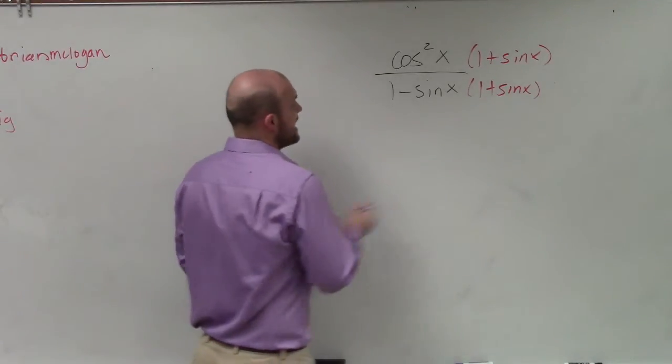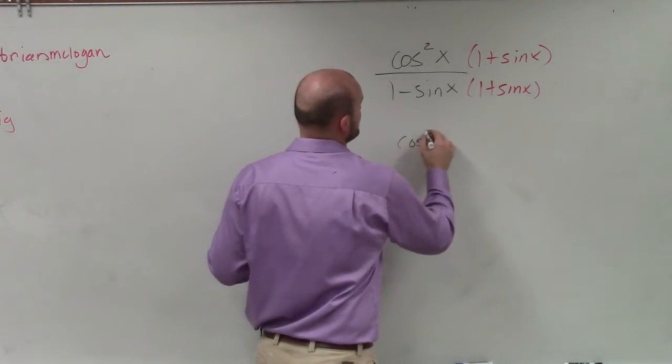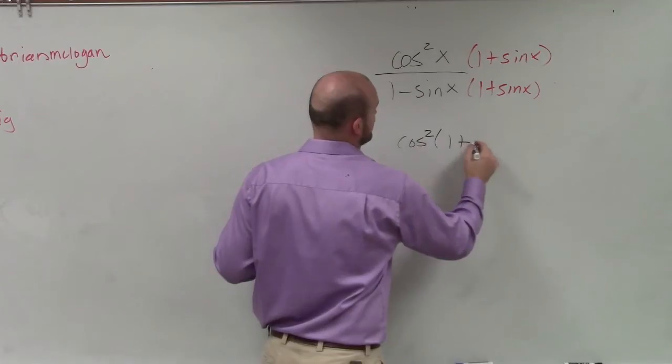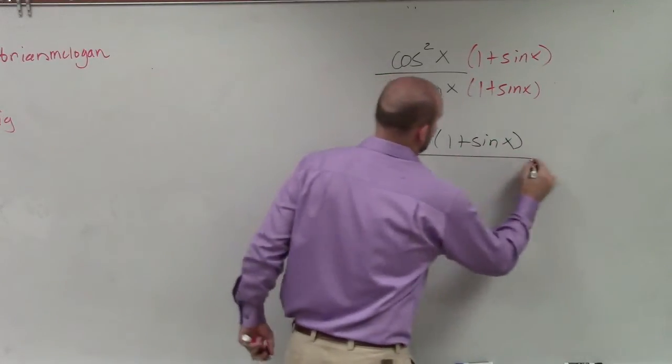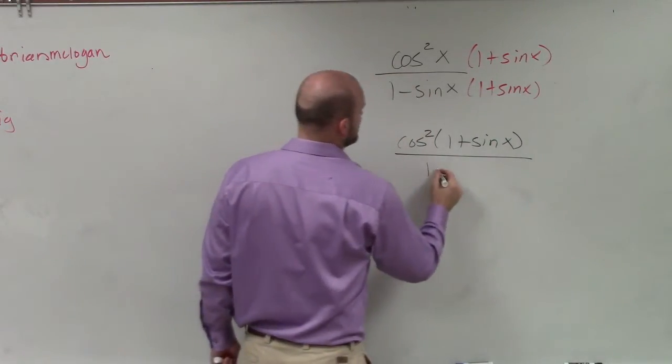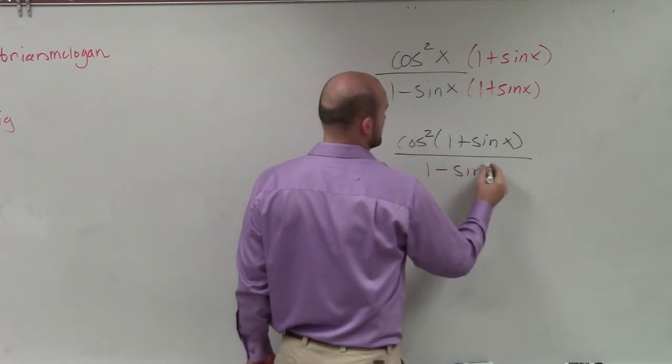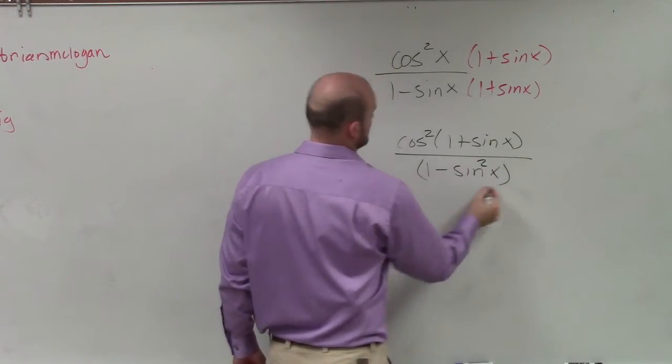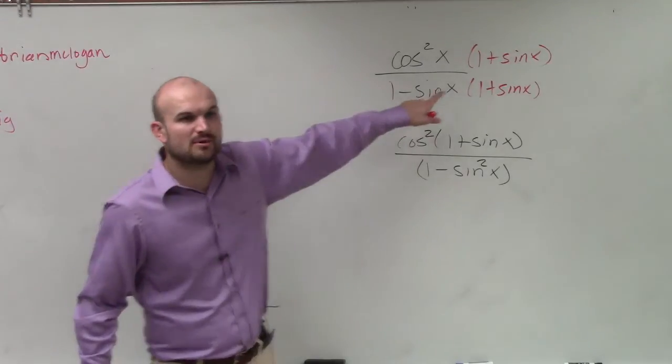then on the top, I'm going to have cosine squared times 1 plus sine of x divided by 1 minus sine squared of x, right?